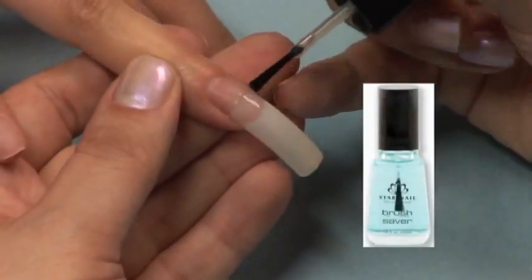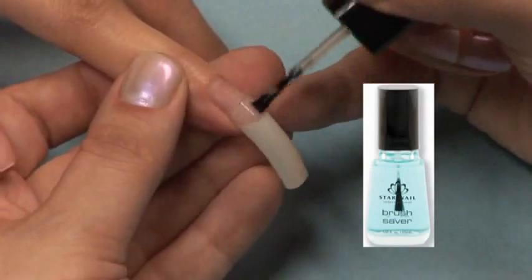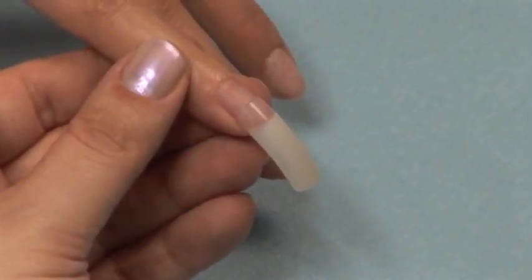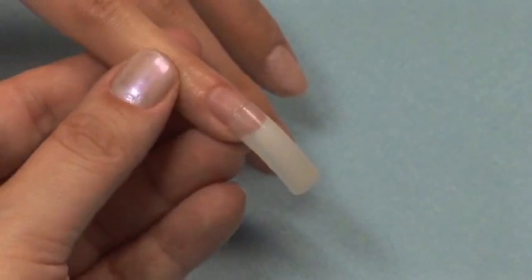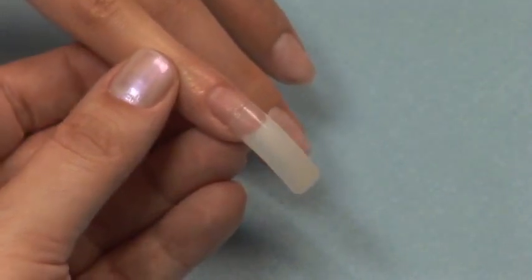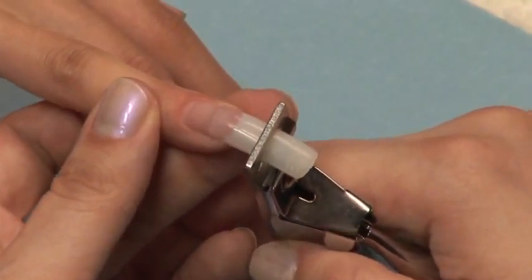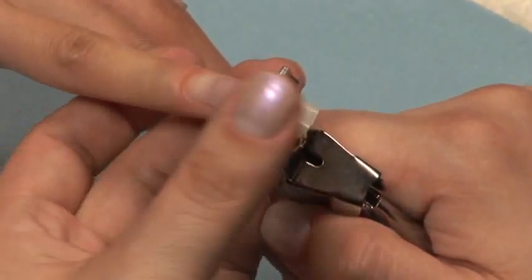For faster and easier tip blending, use Star Nail Brush Saver. Apply Brush Saver to the well or contact area only. While you wait several minutes for the plastic to soften, cut the length of your tips and then blend your tip with a 180 grit file.